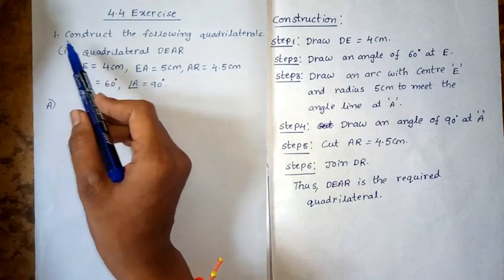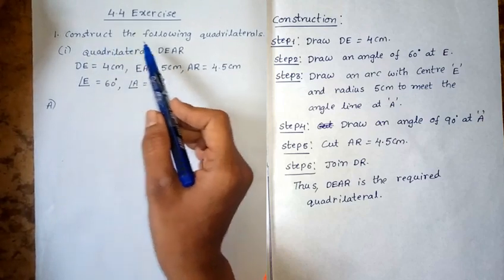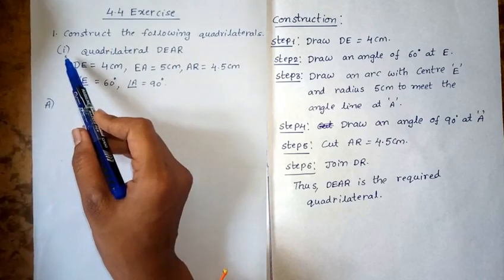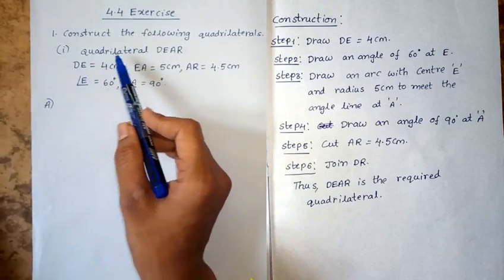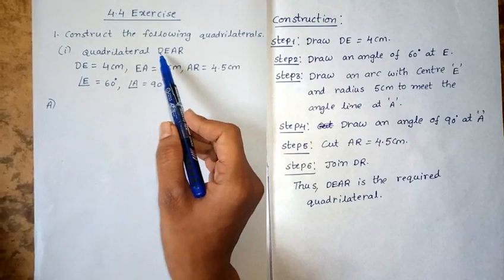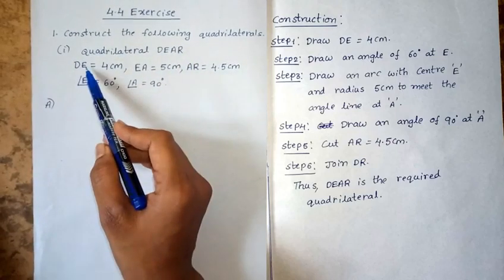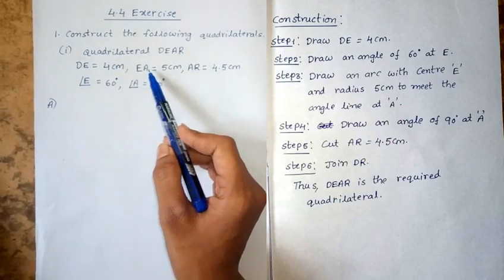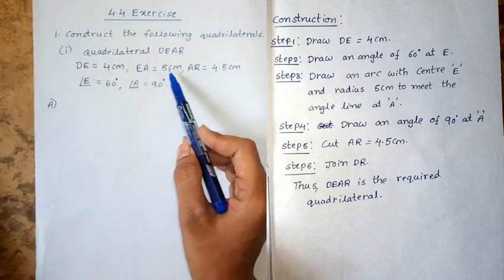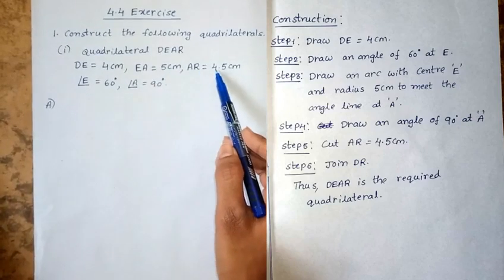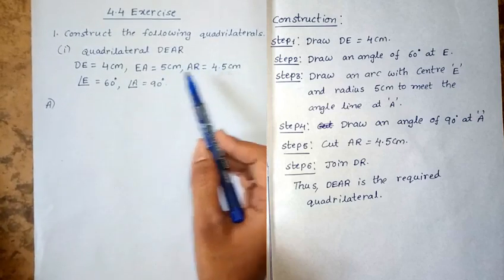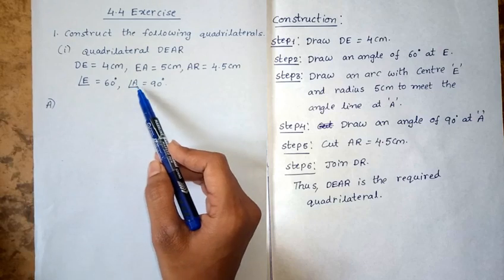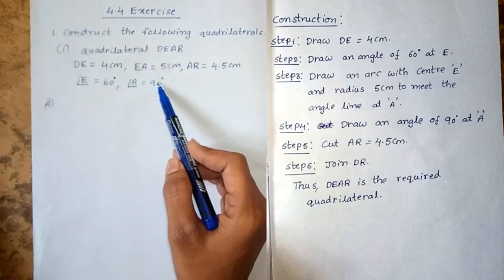1st Roman, construct the following quadrilaterals. 1st one: quadrilateral D-E-A-R. Given: DE equal to 4cm, EA equal to 5cm, ER equal to 4.5cm, angle E equal to 60 degrees, angle A equal to 90 degrees.